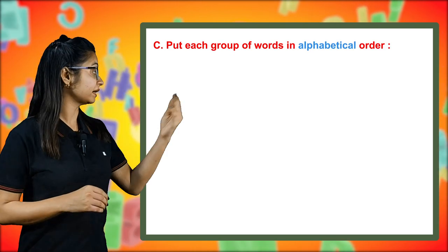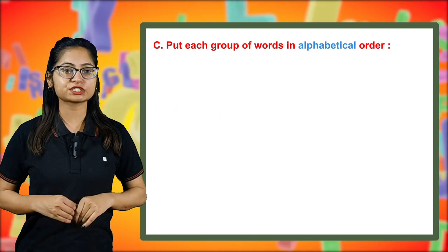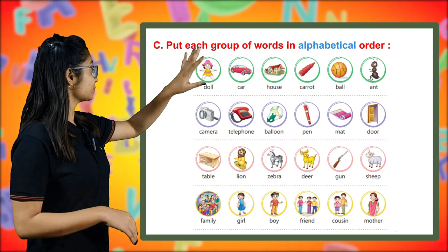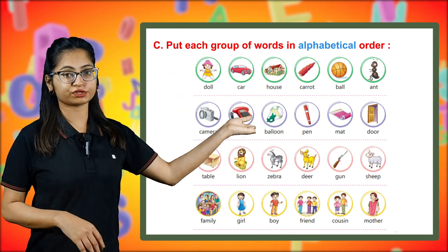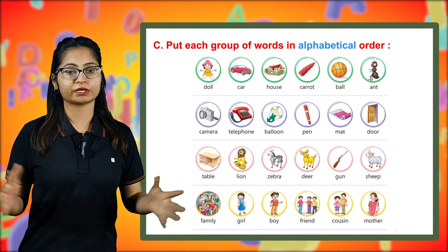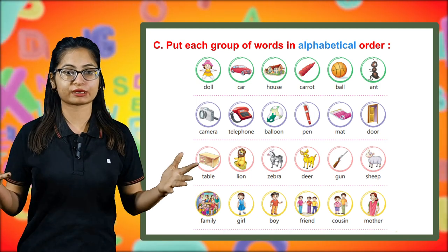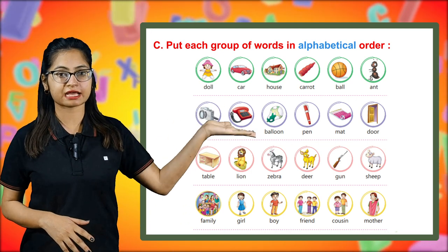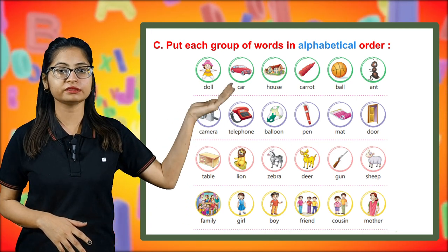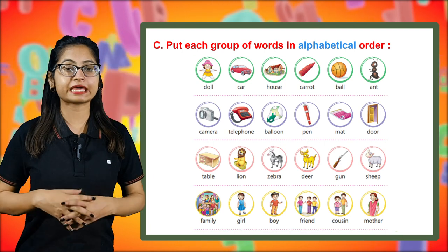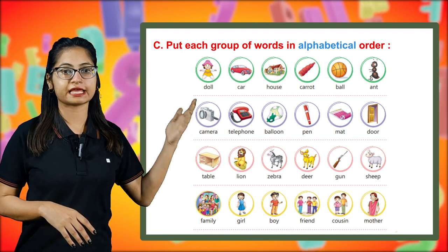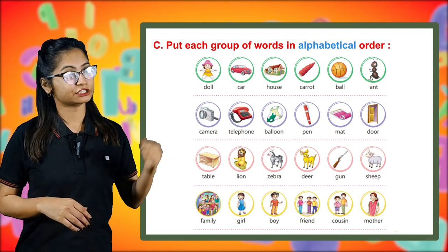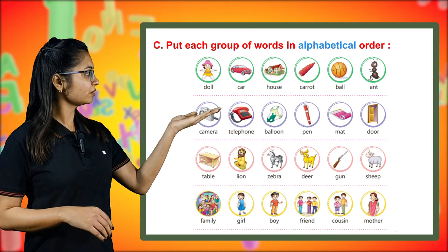Now let's read Part C: put each group of words in alphabetical order. You have been given pictures with the correct word and you have to arrange them. The first group has doll, car, house, carrot, ball, and ant. Since A comes first, the answer is: ant, ball, car, carrot, doll, and then house.